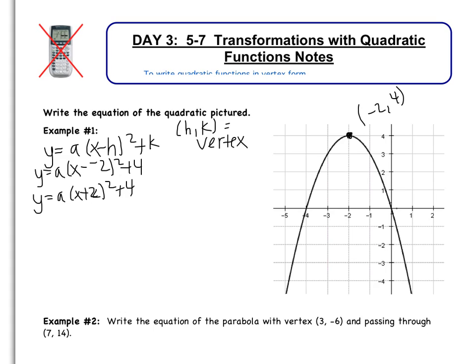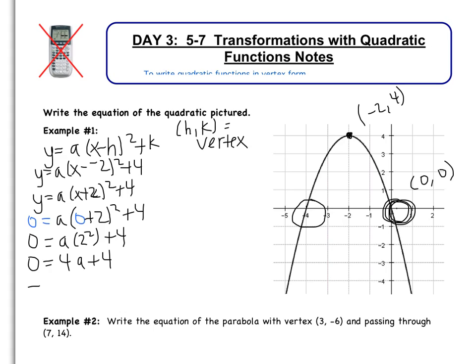So the last piece of information I need is that a. So what I need to do now is choose another point on the graph that will help me find a. There's a whole bunch of points that you should see. I could choose this negative 4 comma 0, or probably the easiest one is to choose (0, 0). So what I'm going to do is substitute (0, 0) in for x and y and solve for a. So I get 0 equals a multiplied by (0 add 2) squared add 4. So 0 equals 4a add 4. If I subtract 4, I get negative 4 equals 4a, and a equals negative 1.